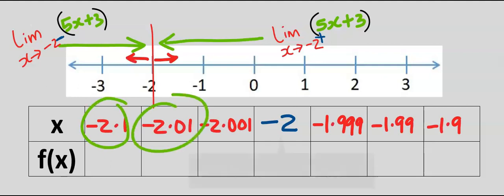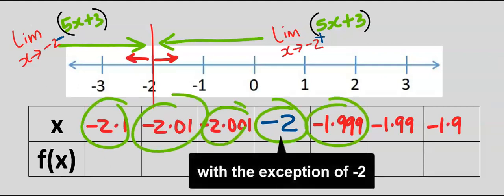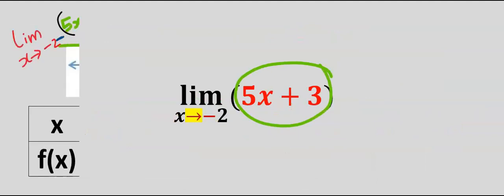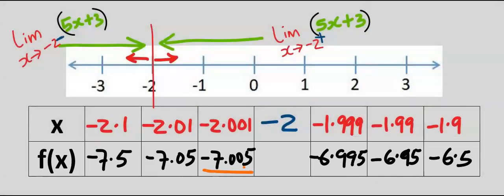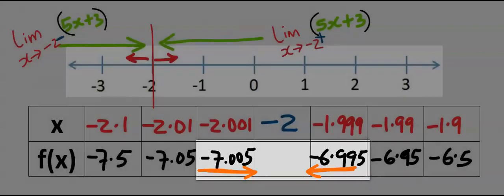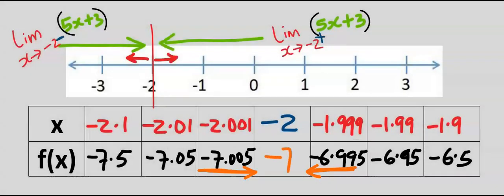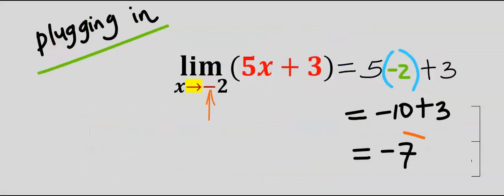Next, we are going to substitute each of these values into the given function, which is 5x plus 3. After filling out the table, you can observe that this is approaching minus 7 from the left-hand side, and from the right-hand side it is approaching minus 7 as well. Take the average of this and the average of this, and you're going to get minus 7, which is the same answer as we got in plugging in.